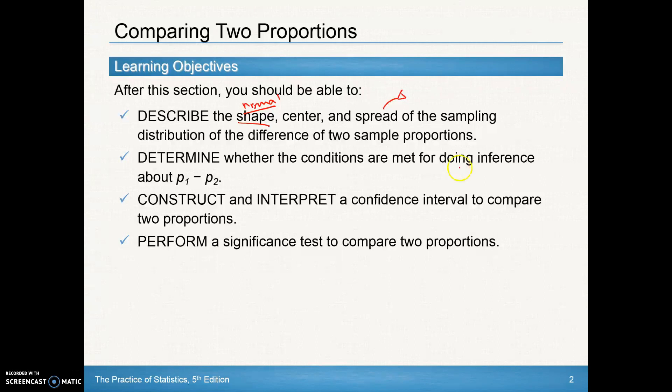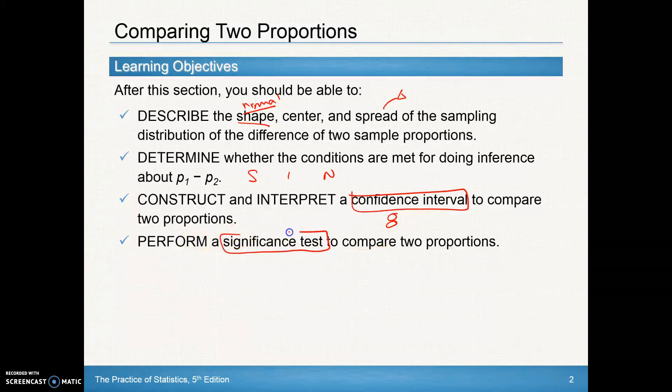We'll also determine whether the conditions are met for doing inference—that's our SIN: SRS, Independence, and Normality. We're going to construct and interpret a confidence interval, relating to material from Chapter 8, and perform a significance test, relating to Chapter 9, except now on two proportions.